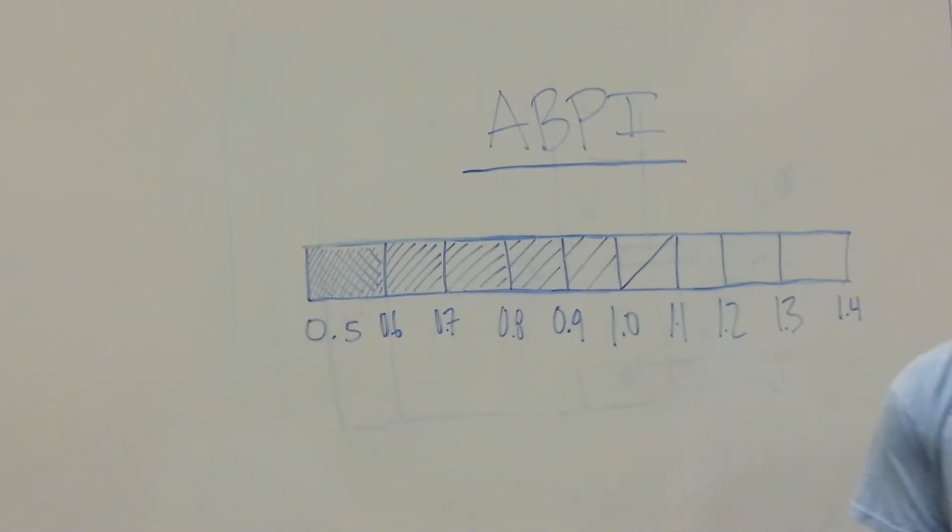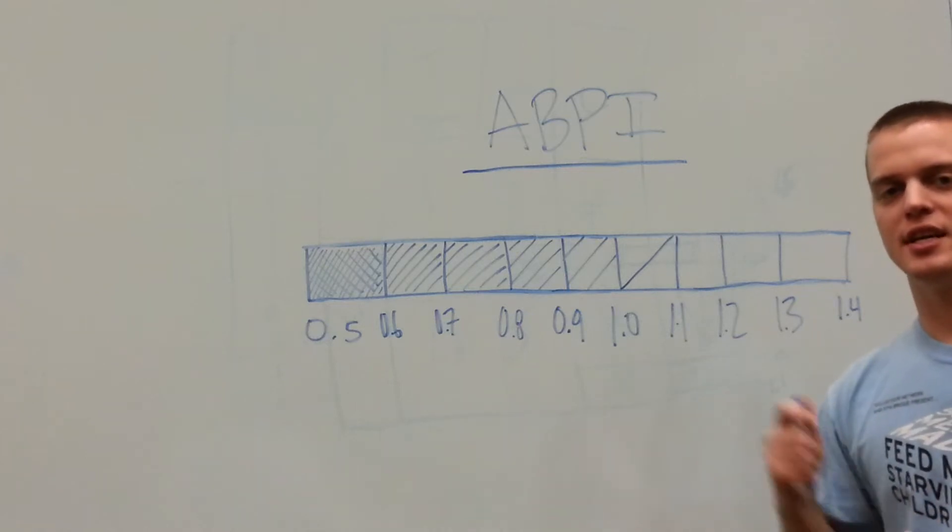This video will introduce you to the test known as the Ankle Brachial Pressure Index, or ABPI. This test is a metric used to measure the severity of atherosclerosis inside your arteries.